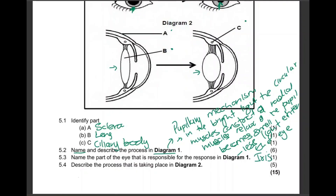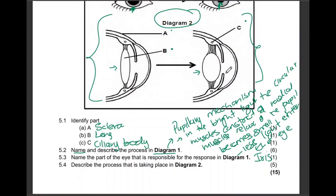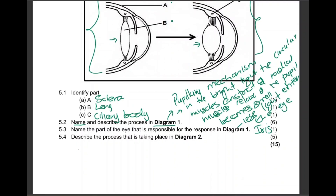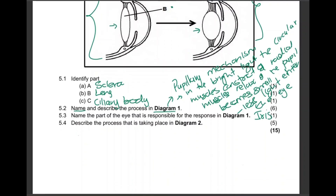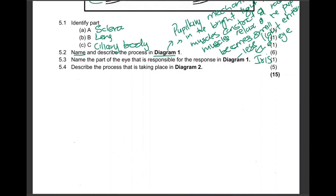Describe the process taking place in diagram two. What we are seeing is accommodation — but accommodation for distant or near vision? It's definitely near vision. So we describe accommodation for near vision. They didn't ask us to name the process, but the answer is accommodation for near vision.